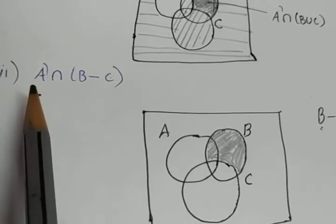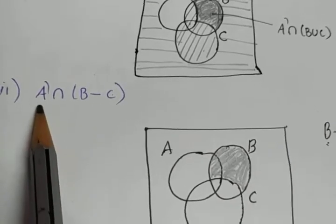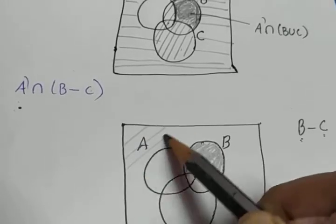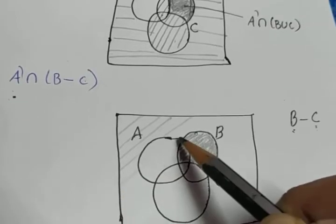Again, what we need is A dash intersection B minus C. So, we have to find the A dash also. So, A dash I am going to draw with the slanted line. Except A, everything else is A dash.